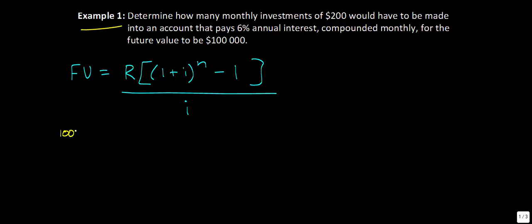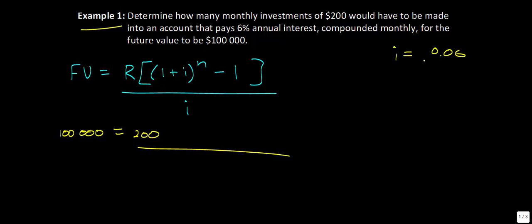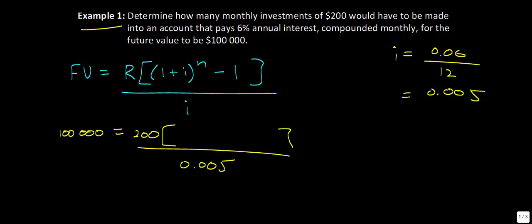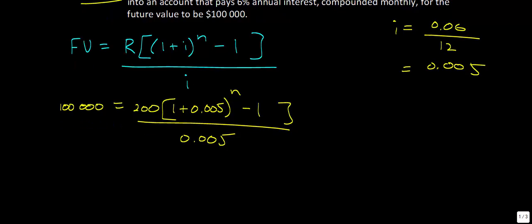For my future value I'm going to have $100,000. My regular investment is $200, so I substitute that in. My i value — this is the part that's a little complicated — i is the interest rate divided by the number of compounds. In this case it's 0.06 divided by 12, because we're compounding monthly, which gives 0.005. So I write 0.005 into the equation. My brackets now contain 1 plus 0.005, raised to the power of n, minus 1, all divided by 0.005.